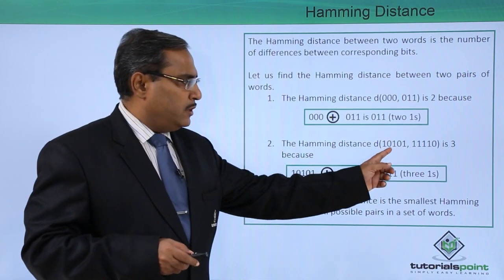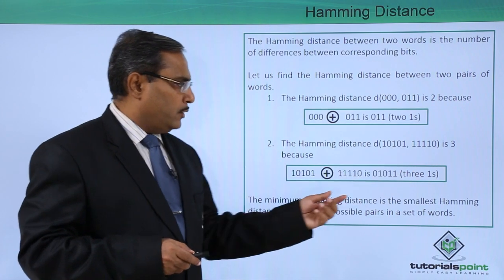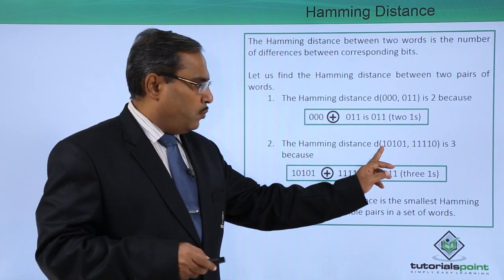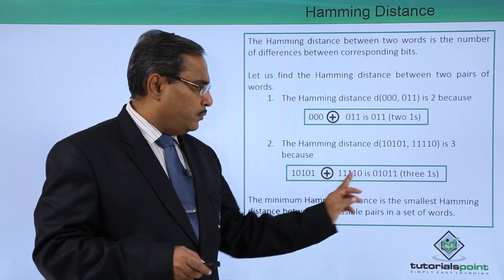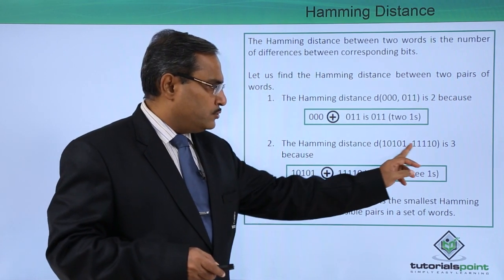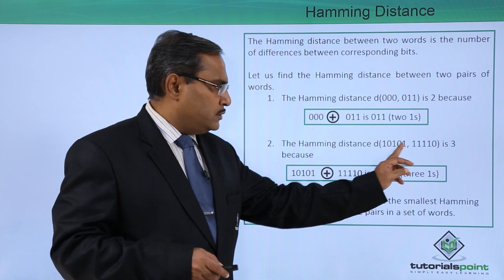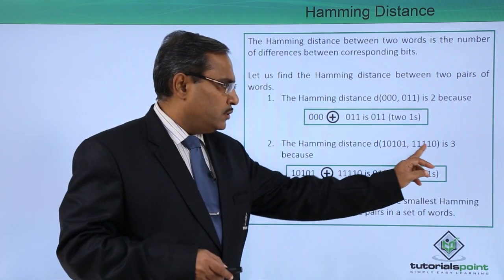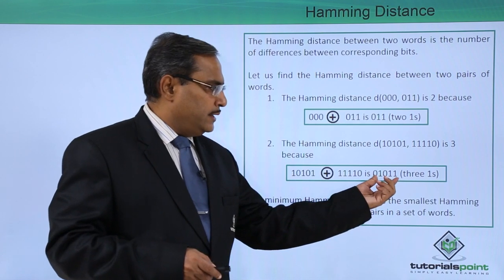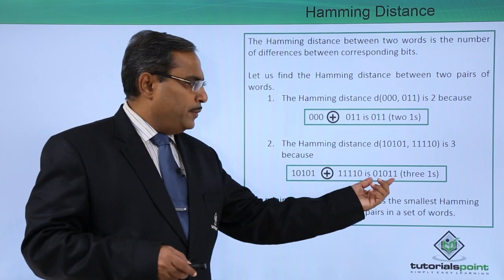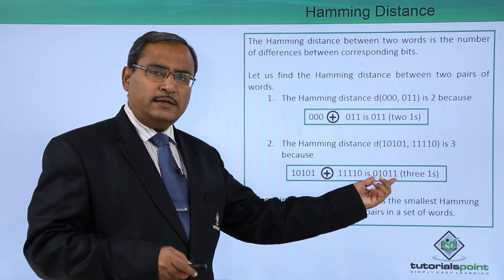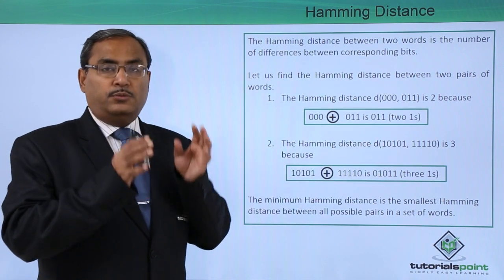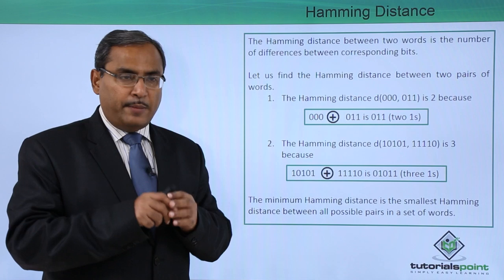For the second word pair, if you do the XOR: 1 XOR 1 is 0, 0 XOR 1 is 1, 1 XOR 1 is 0, 0 XOR 1 is 1, 1 XOR 1 is 0, 0 XOR 1 is 1, and 1 XOR 0 is 1. Counting the ones in this XOR result gives three ones, so these two word pairs will have three as the Hamming distance.